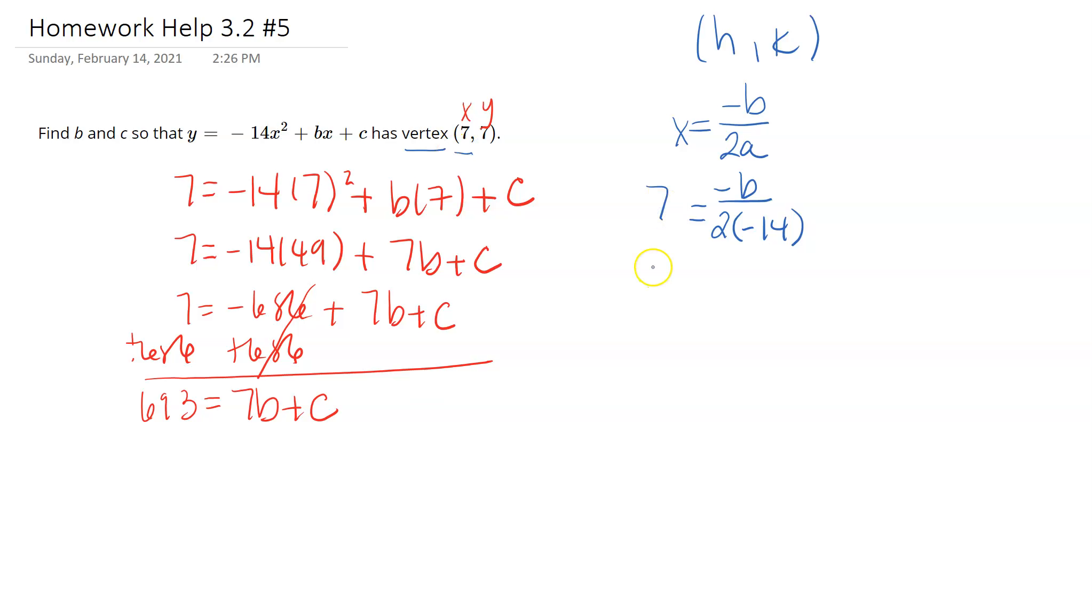So we can solve this out: 7 equals negative b over negative 28. I'm going to multiply both sides by negative 28. 28 times 7 gives me negative 196 equals negative b. Then divide both sides by negative 1, so b equals 196. Now I'm going to take that value and plug it in over here to get my c.